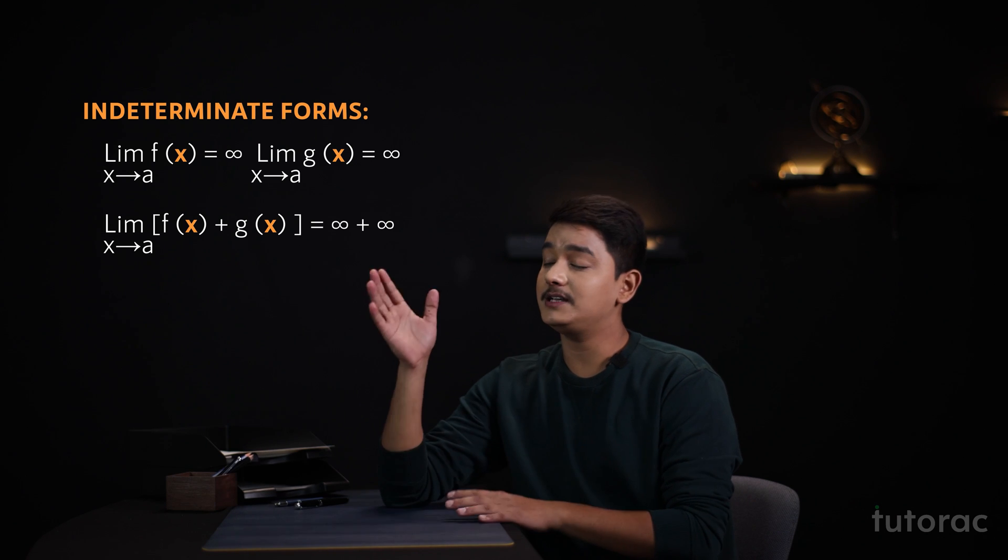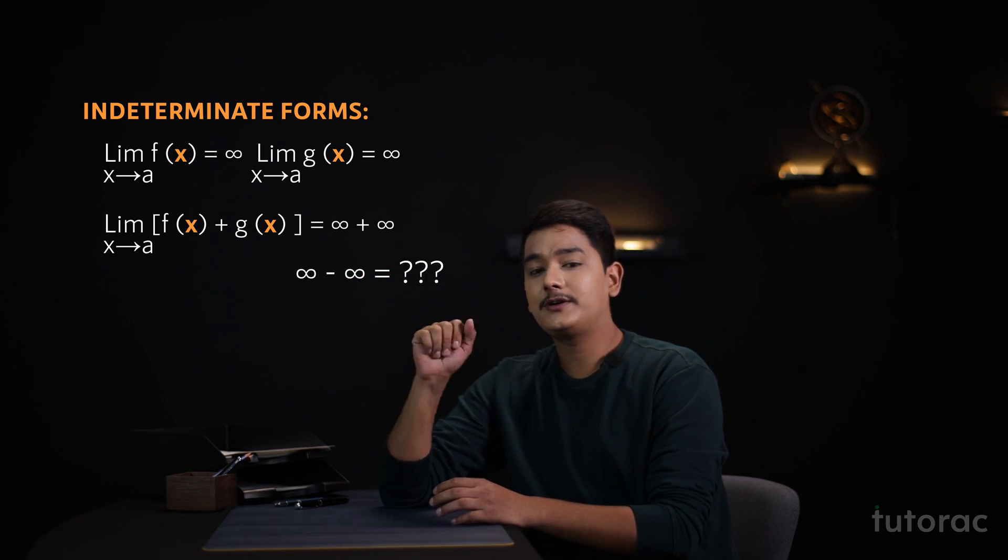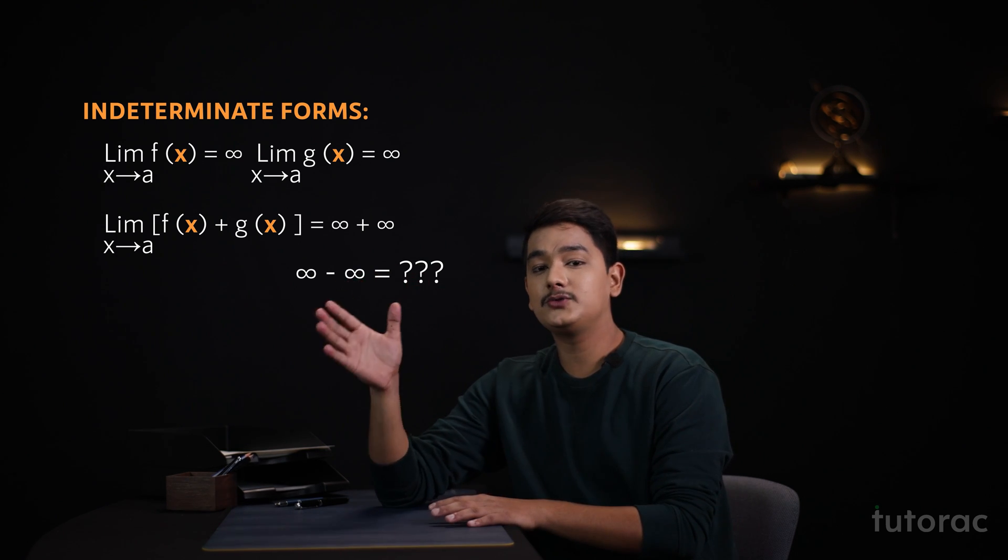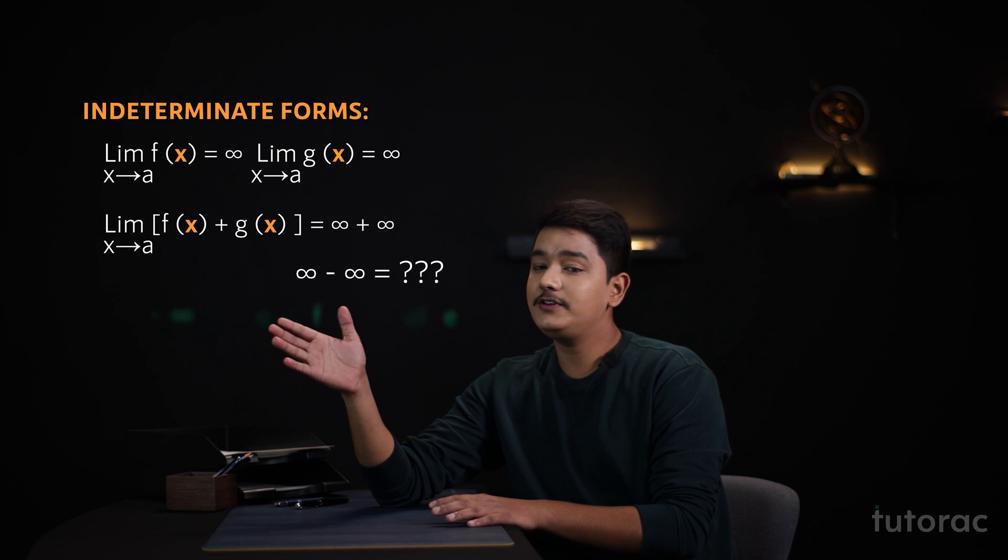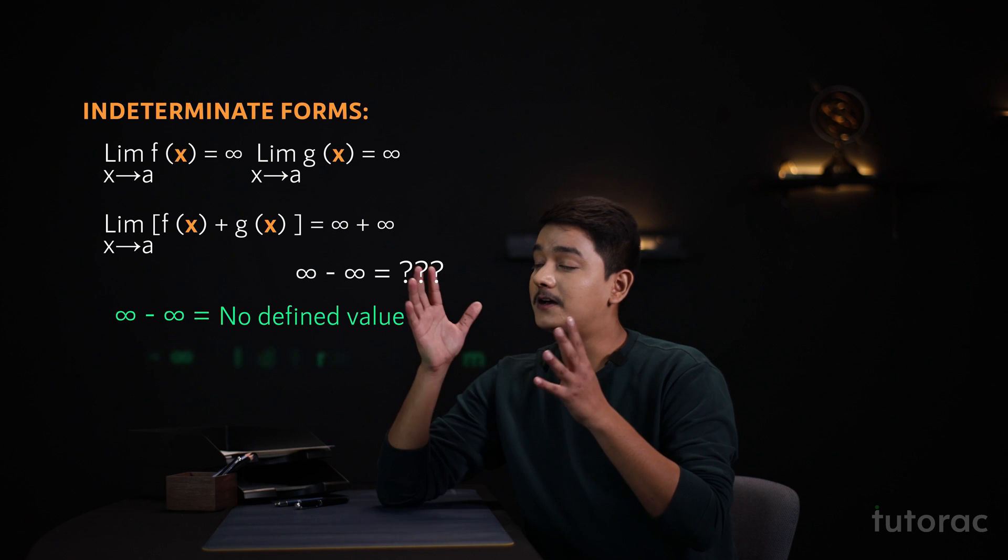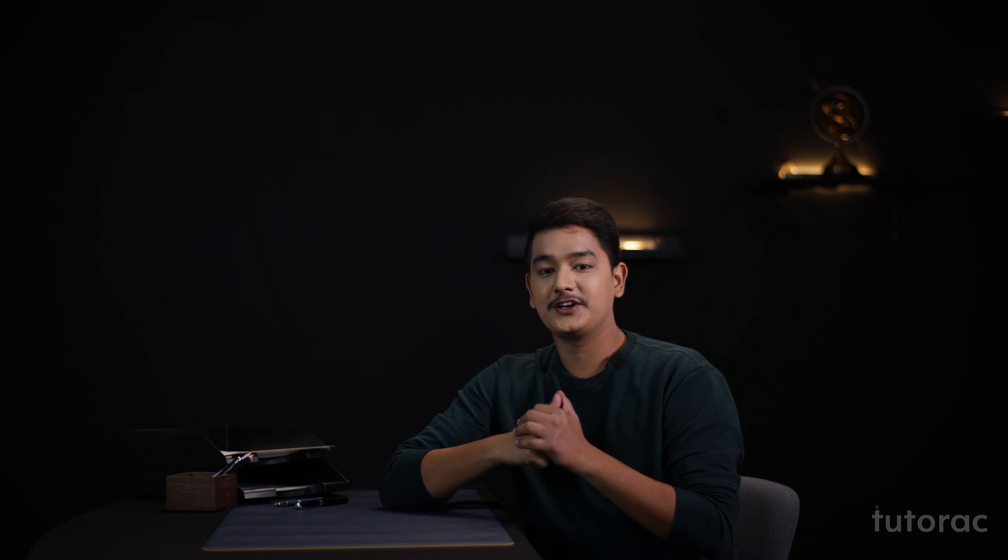But what if we get a result as infinity minus infinity? Since both the values are not determined and we do not know any defined values for these two numbers, therefore infinity minus infinity will not give us a determined value and this gives us our first indeterminate form that is infinity minus infinity.